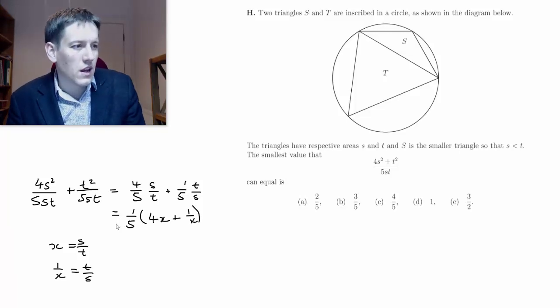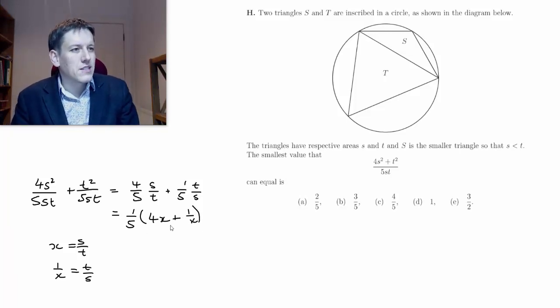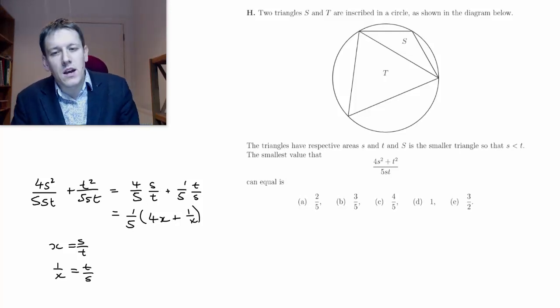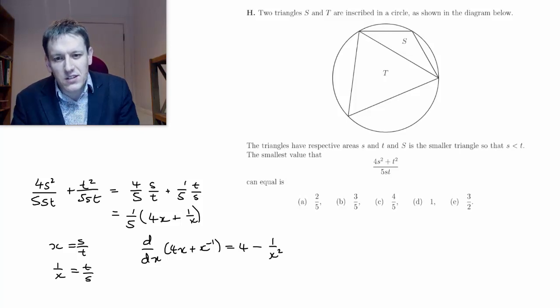Actually, I'm going to see now if I can find the minimum value of this expression, just 4x plus 1 over x, doesn't matter if you times by fifth, it'll be the same value of x that minimizes it. And then we'll think about how to interpret this. So d by dx of 4x plus 1 over x, so that's d by dx of 4x plus x to the minus 1. So I get 4 minus x to the minus 2, so 4 minus 1 over x squared. And I would want to set that equal to 0.